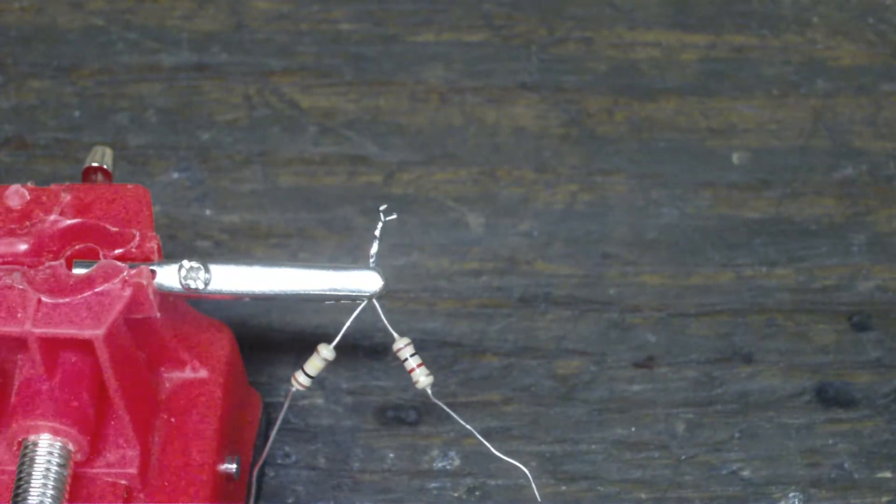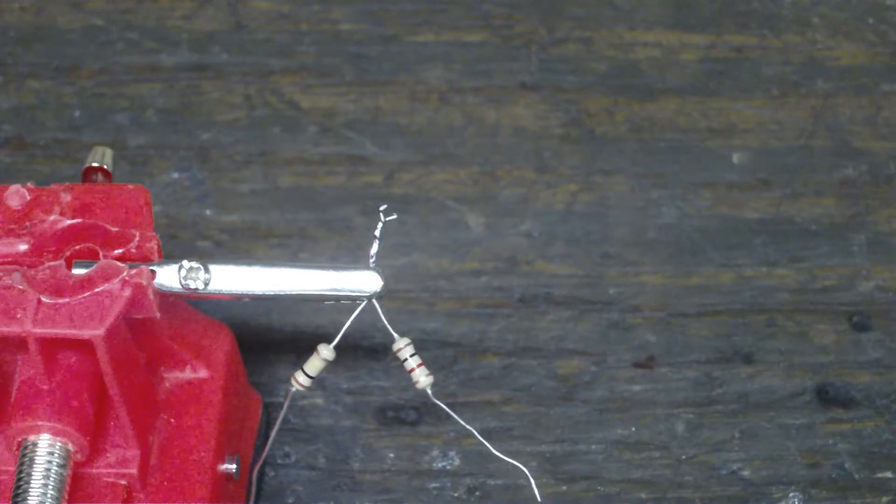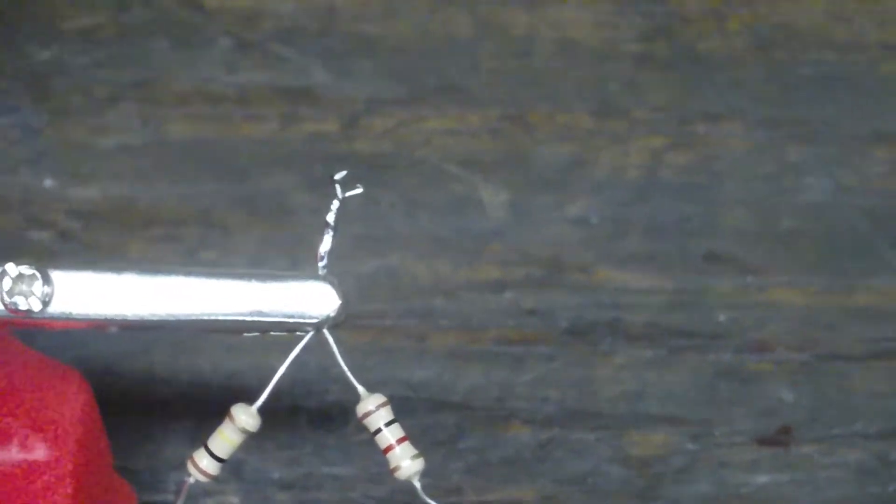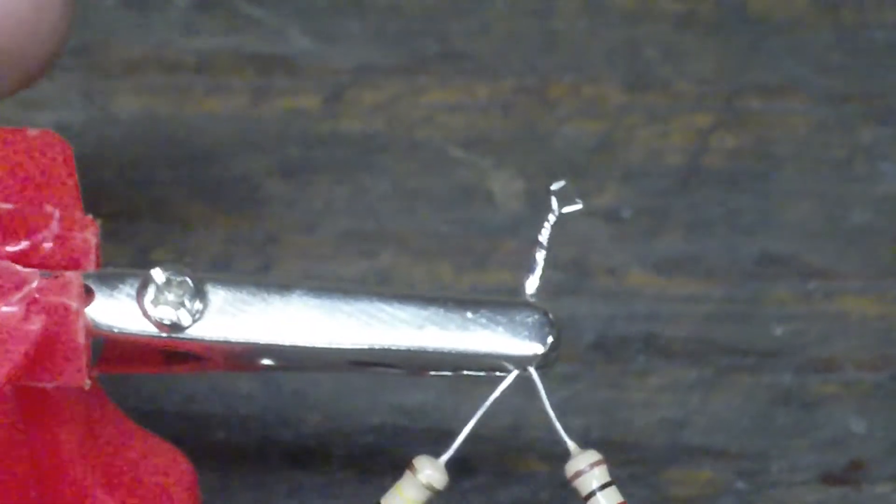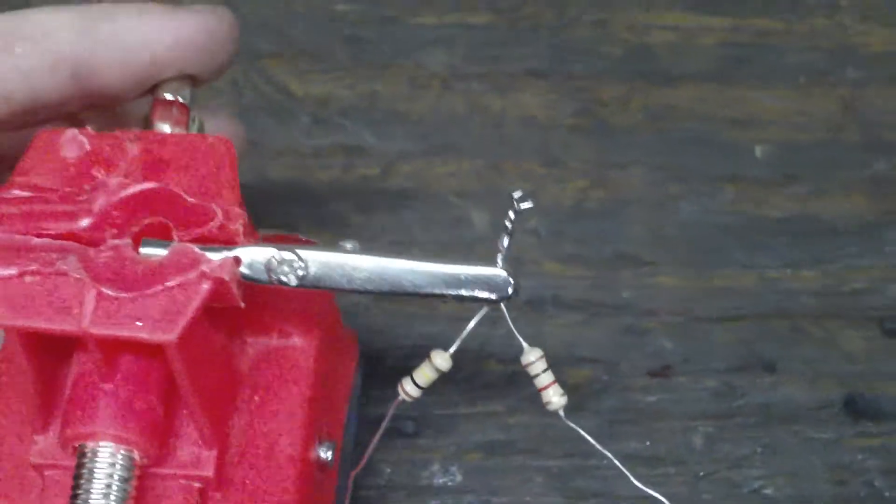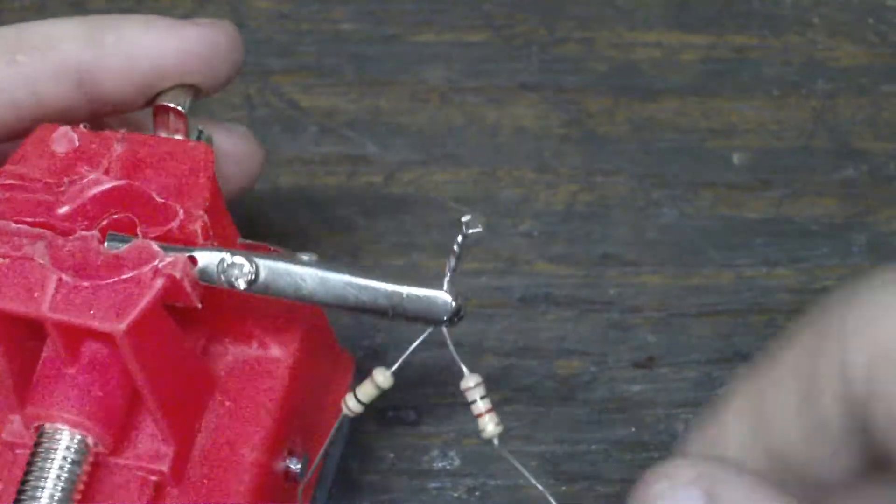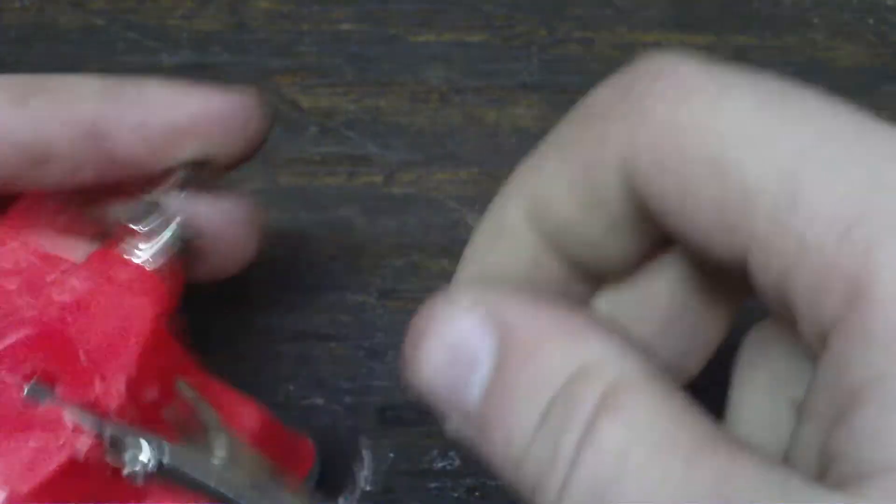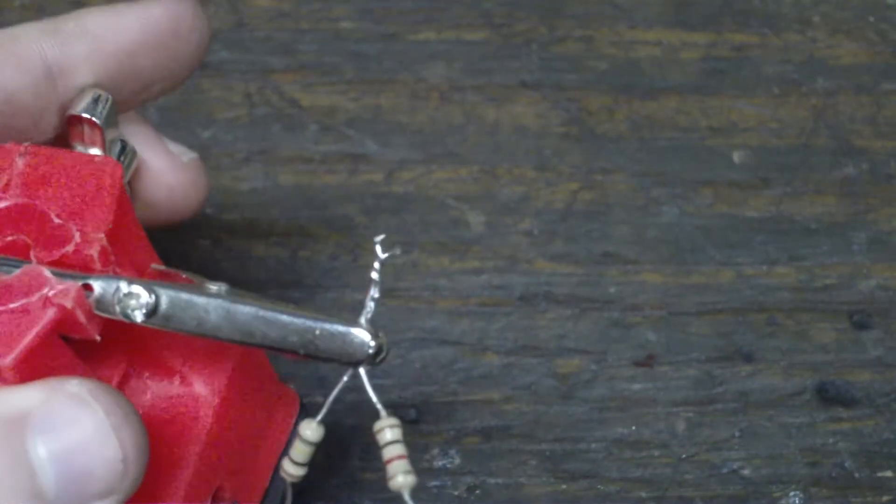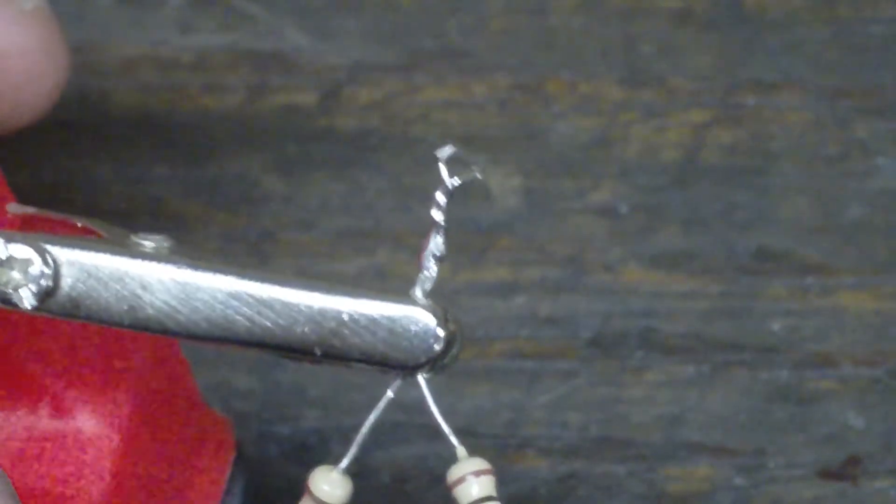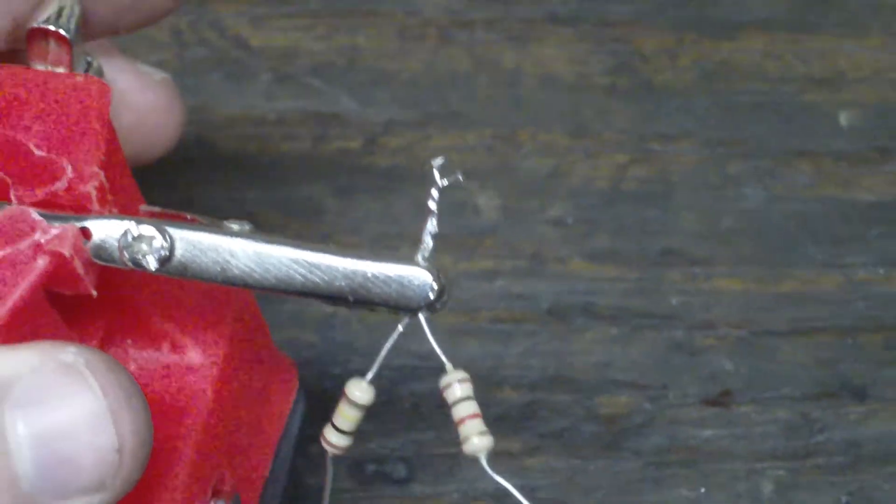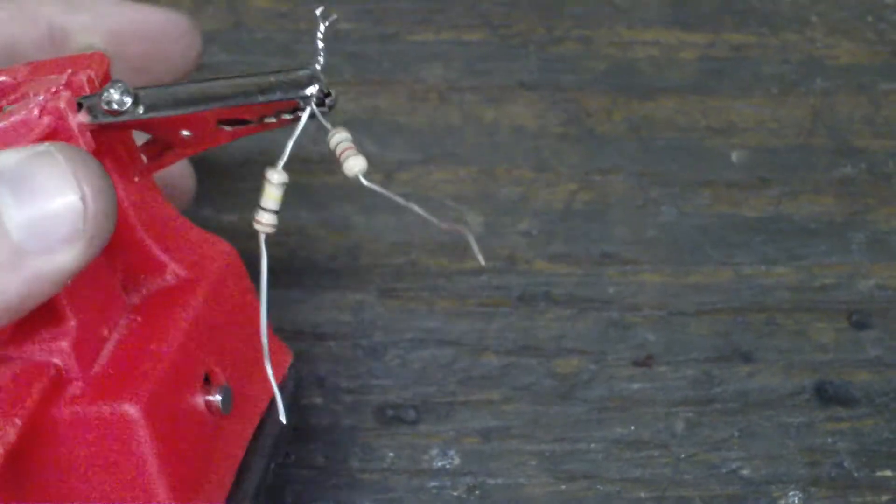Now if it stays shiny, you got a good solder joint. If it gets grayish with no shine at all color to it, it's usually what they call a cold solder joint and it usually won't hold. It's probably hot still, but that's a pretty good joint right there because it's still shiny, you can see. That's about it for doing electronic components.